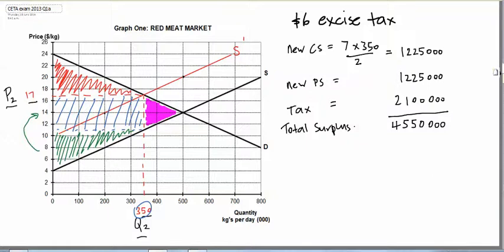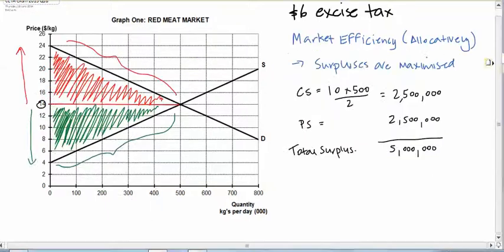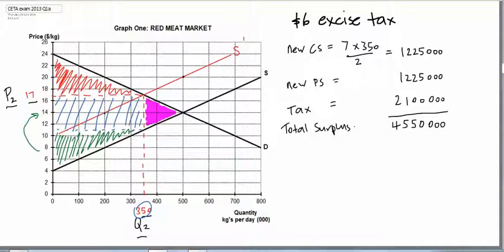So you can see, if you look back, we just calculated a total surplus without any tax of $5,000,000, and now we have a total surplus with the tax of $4,550,000.